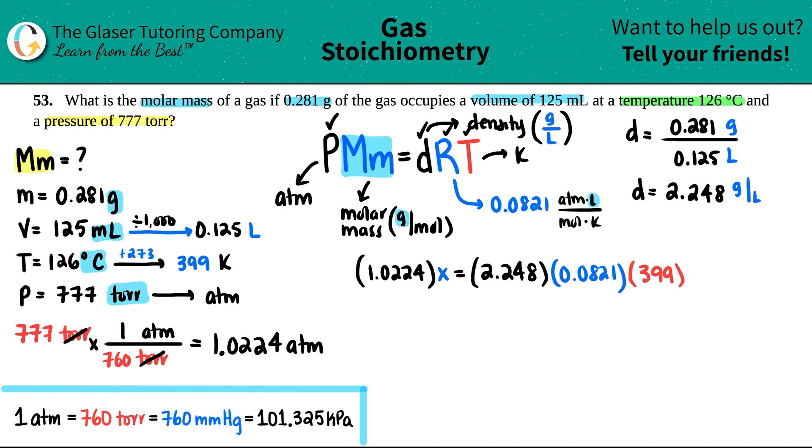We want to solve for X. So what I'm going to do is I have to divide on both sides by the 1.0224 on both sides. And that gets rid of this. Goodbye. And now we have X, which is the molar mass.